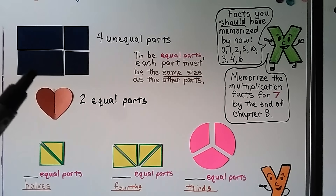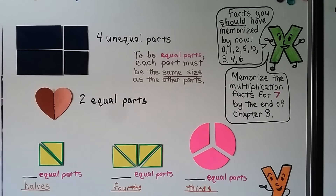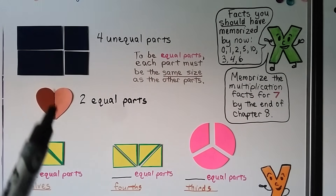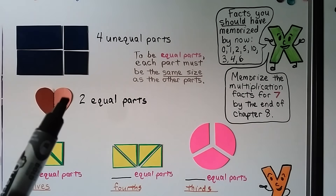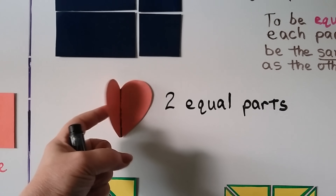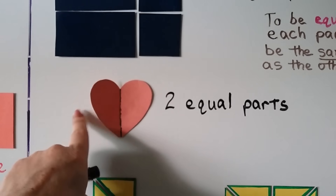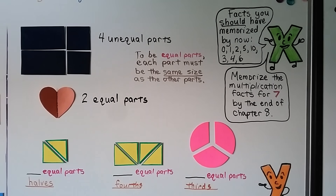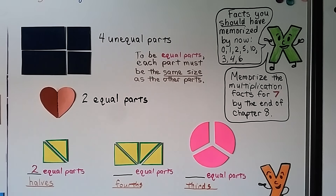Here we have four unequal parts — they're not all the same size. To be equal parts, each part must be the same size as the other parts. Here we have a heart cut into two equal parts. This side is exactly the same as this side, split right down the middle. If I fold this heart in half, this side will be exactly the same as this side. I can take this side, fold it over, and look — it's identical. So I know I have two equal parts. Here we have a square cut on a diagonal into equal parts. If you said two, you're right — two equal parts make halves. We have a half and a half, two halves.